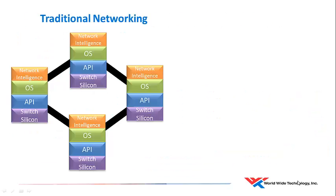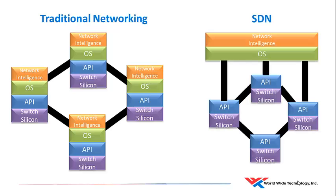Another way to look at it is in this slide. Note that the switch silicon — which is the hardware — the application programming interface, the network operating system, and the network intelligence — which is the programming of the switch or the router — are all located on the individual devices in the network. With OpenFlow, we remove the network intelligence and the operating system and place them in the centralized controller.